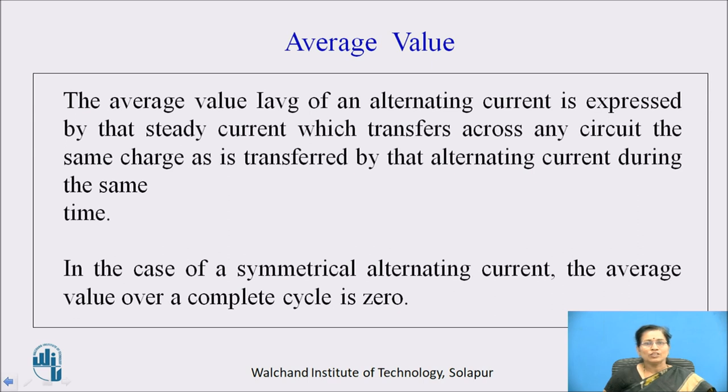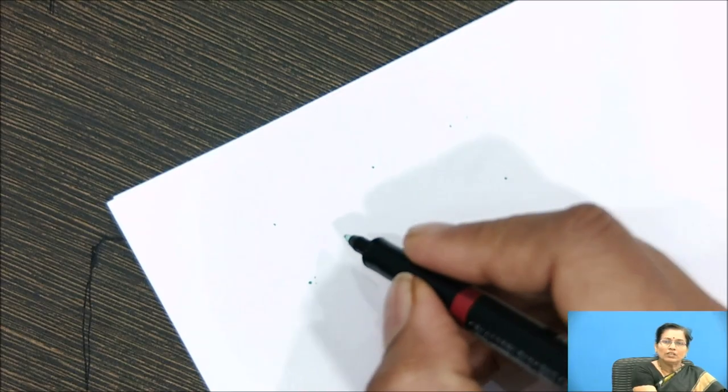In case of symmetrical alternating current, the average value over a complete cycle is zero.